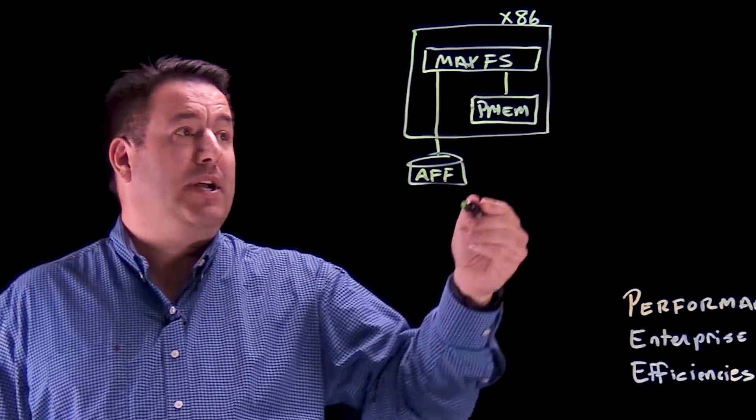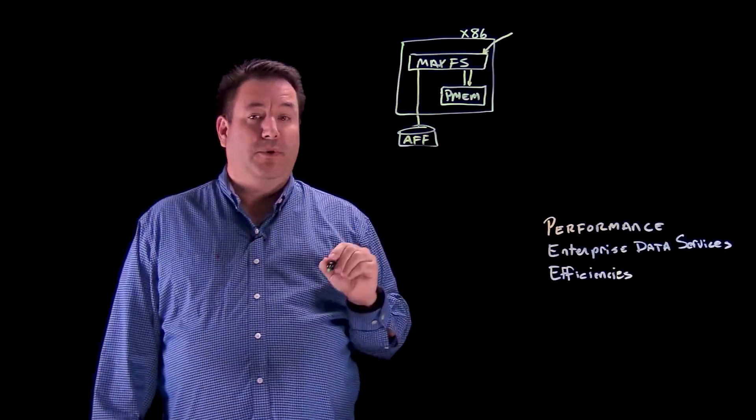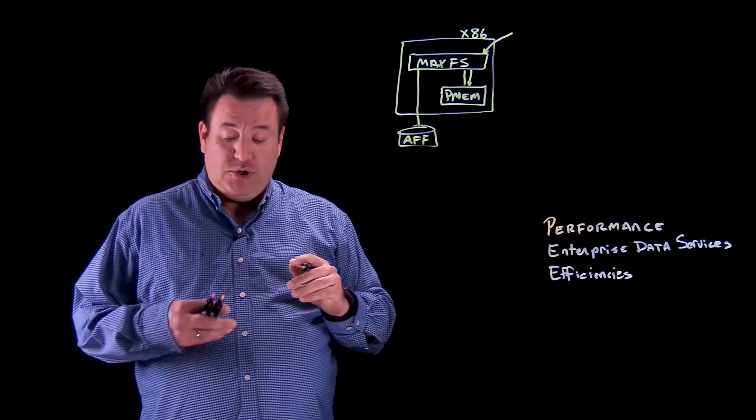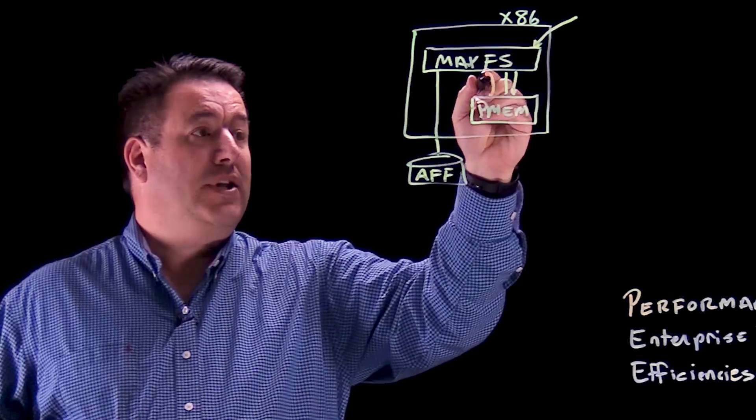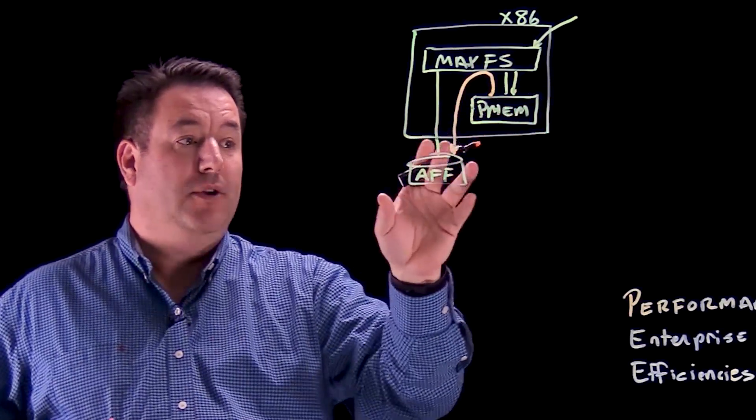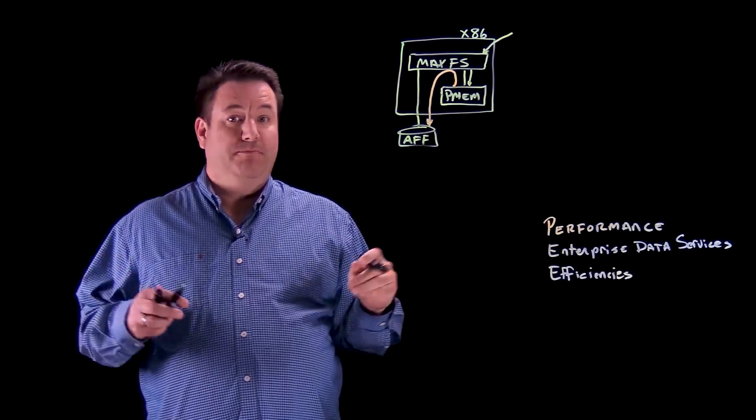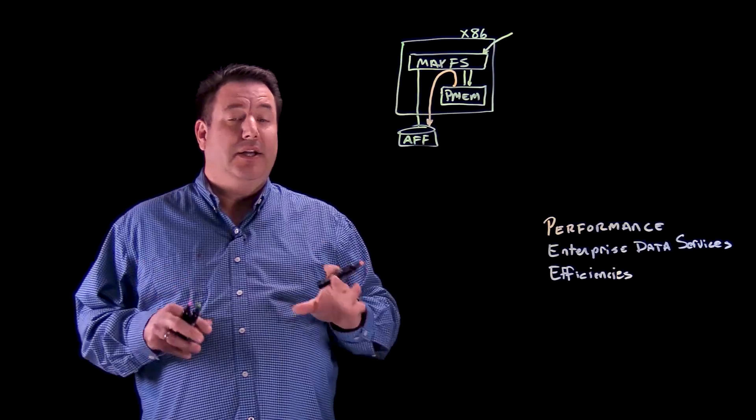And as data is written into the MaxFS file system, it is always written to the persistent memory tier. Should data fill up the persistent memory tier, we then move the data from the persistent memory tier to the storage tier. So it's a tiered file system, it's not a cache, it doesn't copy data, it moves data.